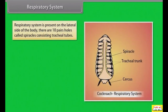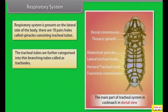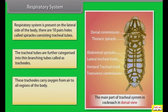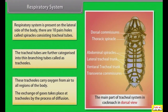The respiratory system is present on the lateral side of the body. There are ten pairs of holes called spiracles consisting of tracheal tubes. The tracheal tubes are further categorized into thin branching tubes called tracheoles, which carry oxygen from air to all regions of the body. The exchange of gases takes place at the tracheoles by the process of diffusion.